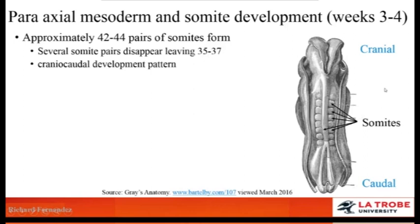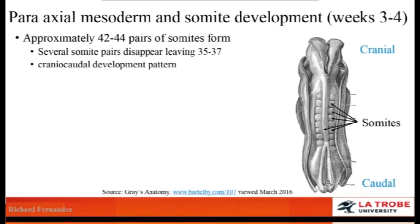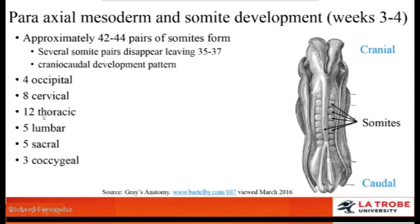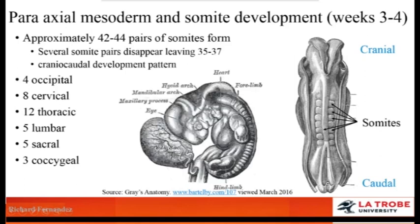It's important to remember that somites develop along a cranio-caudal axis, from the head all the way down to the tail. From this cranio-caudal development pattern, somites are subdivided into regions: four occipital, eight cervical, 12 thoracic, five lumbar, five sacral, and three coccygeal. On a lateral view of a developing embryo, we can identify those somite regions from occipital through cervical, thoracic, lumbar, and sacrococcygeal.